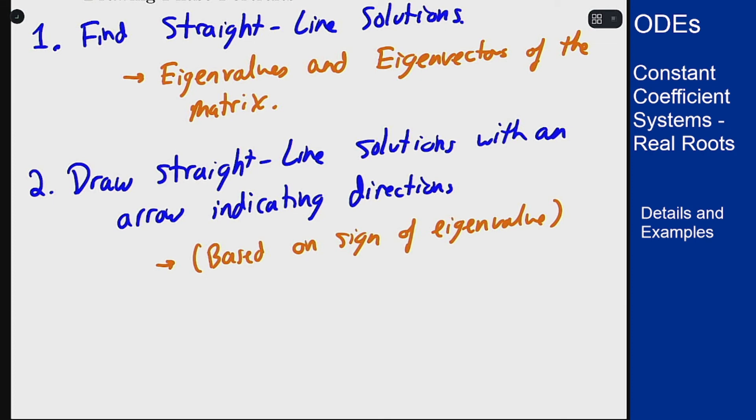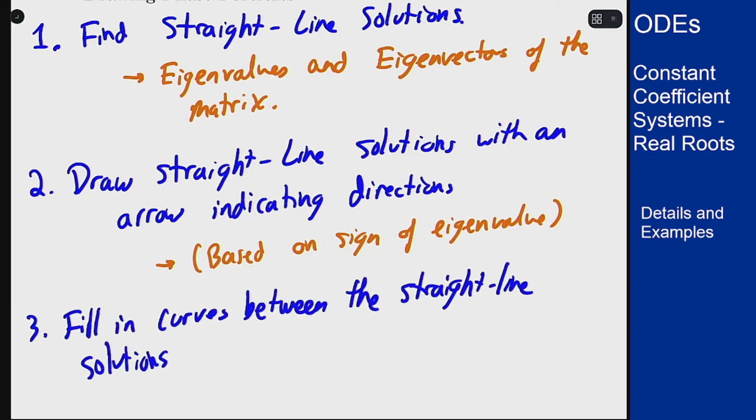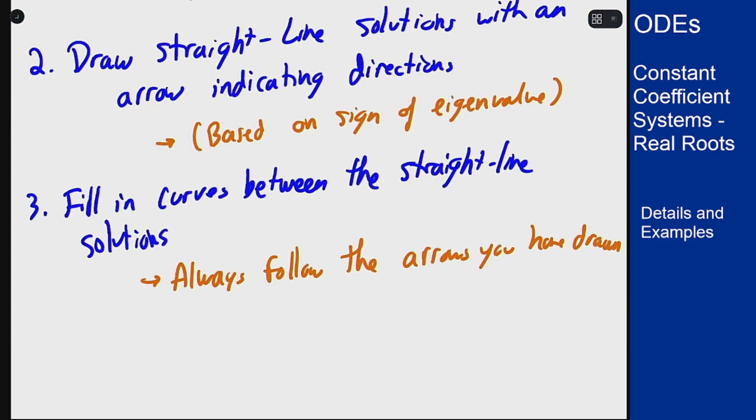And this arrow is based on the sign of the eigenvalue. Positive means away, negative means in. Then you want to fill in the curves in between these straight line solutions.